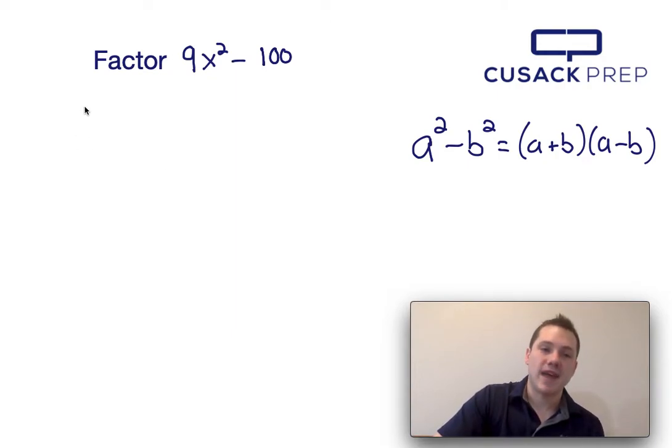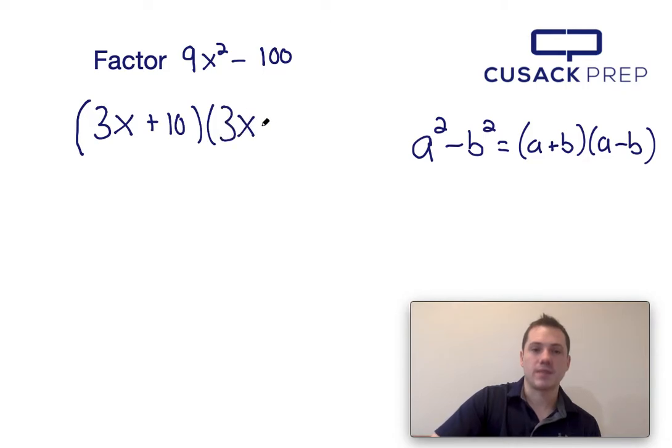So essentially when factoring the difference of squares, I just write the square root of the first term plus the square root of the second term times the square root of the first term minus the square root of the second term.